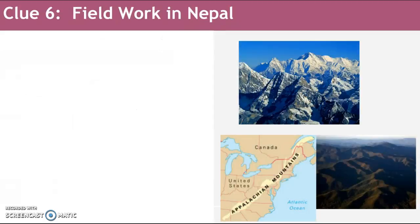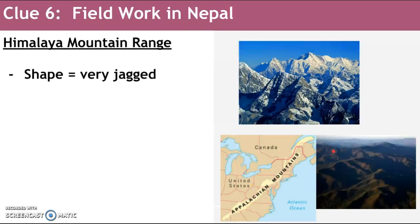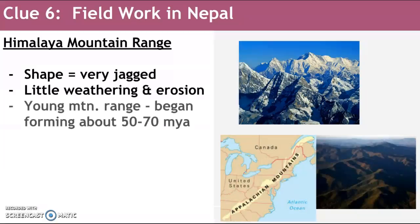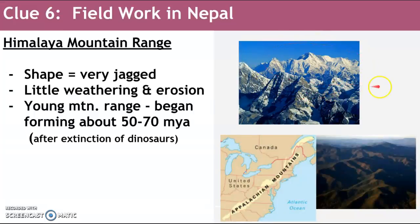To help us answer that, it's helpful to take a look at another mountain range — the Appalachian Mountains along the east coast of the United States. In comparison, the Himalayas are very jagged, while the Appalachians are much more rounded. This is because the Himalayas haven't had as much time to weather and erode. It's a relatively young mountain range; it began forming about 50 to 70 million years ago — after the extinction of the dinosaurs. So these mountains are actually younger than dinosaurs.